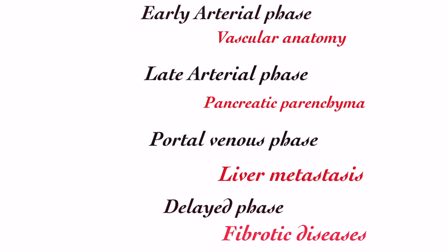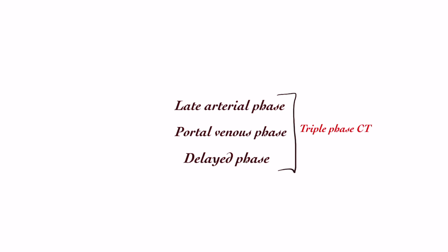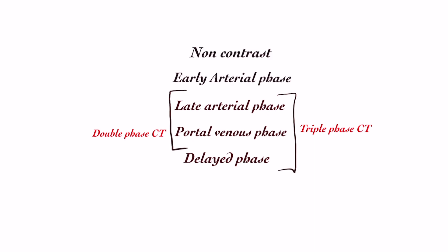There can also be a delayed phase taken by the radiologist 2 to 5 minutes after dye injection — fibrotic processes or tumors with fibrosis are better visualized in this phase. Triple phase CT usually consists of the late arterial phase, portal venous phase, and delayed phase. Double phase CT is usually the late arterial phase and portal venous phase. Two additional phases — the early arterial phase and a non-contrast phase before dye injection — can be added as and when required.